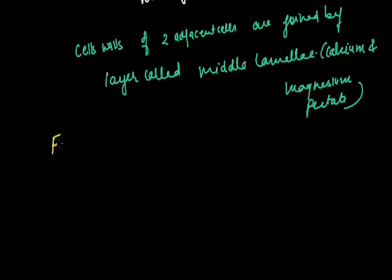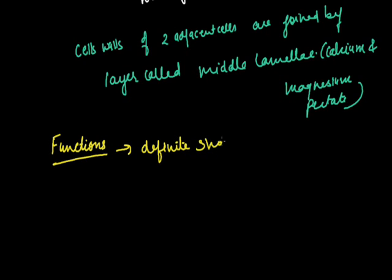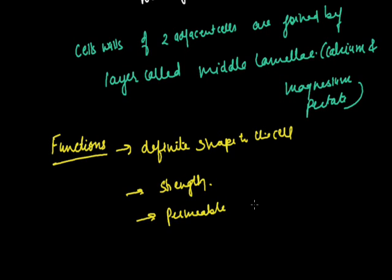Regarding its functions, the cell wall has the following functions. First, it provides a definite shape to the cell. Second, it provides strength. Third, it is permeable — permeable for the entry of molecules of different sizes.